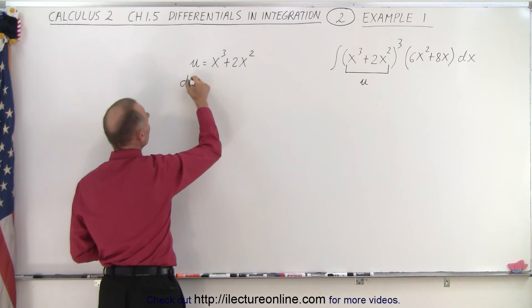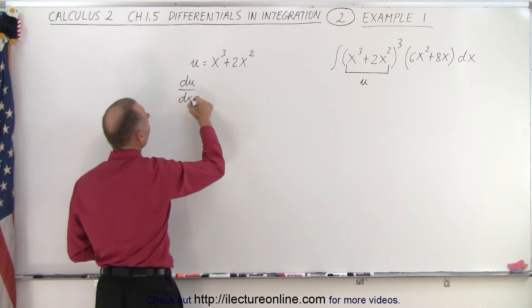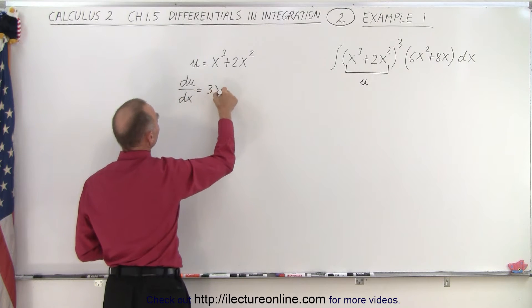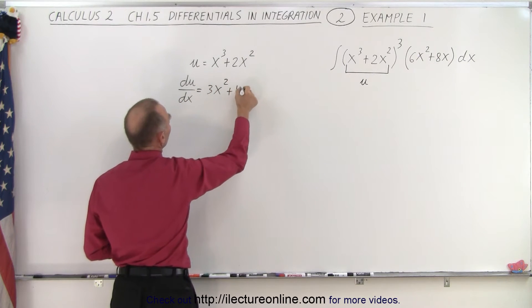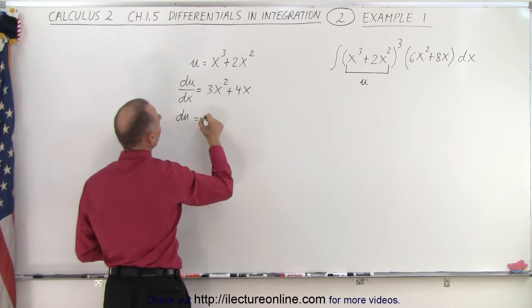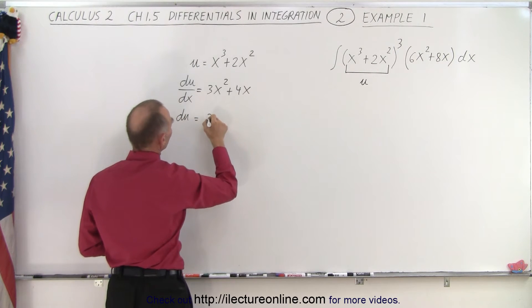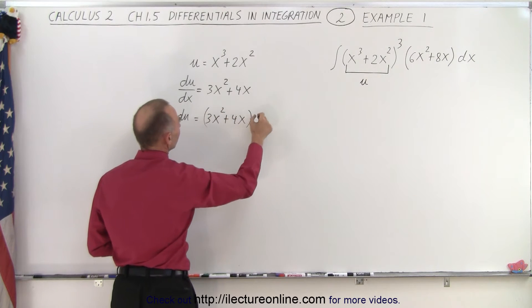Then we can say that du/dx, the derivative with respect to x, is going to be 3x² plus 4x, and du therefore is equal to 3x² plus 4x times dx.